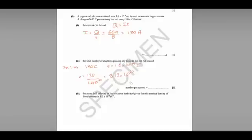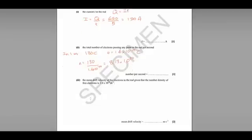8.13 times 10 to the power of 20. And part III asks us to find the mean drift velocity of the electrons, given the number density of free electrons is 1 times 10 to the power of 29 per cubic metre. So for this, we recall our equation on the formula sheet that I equals A, N, E, V.